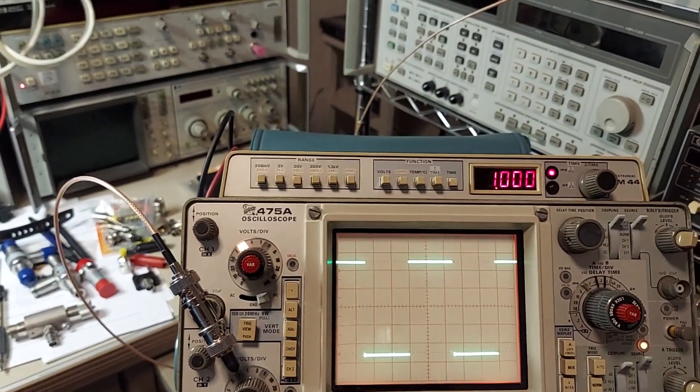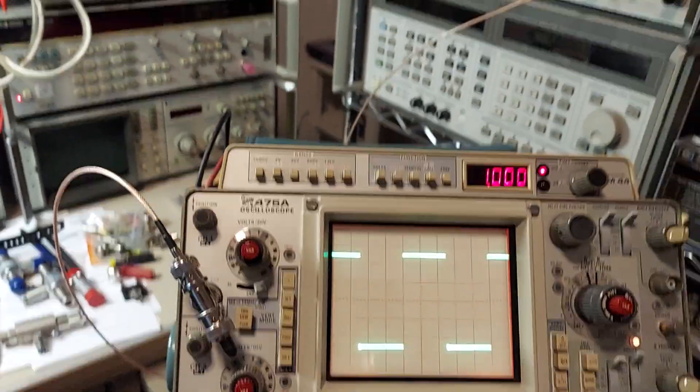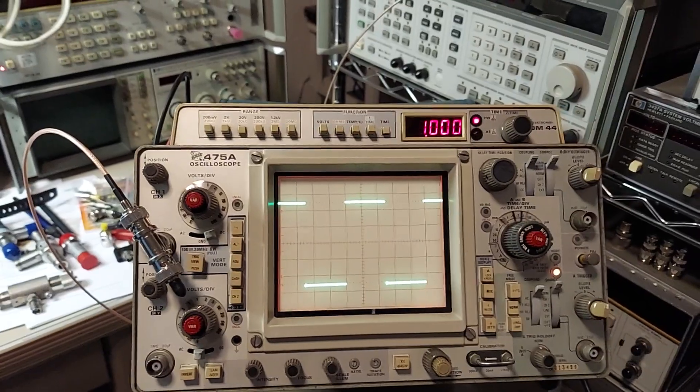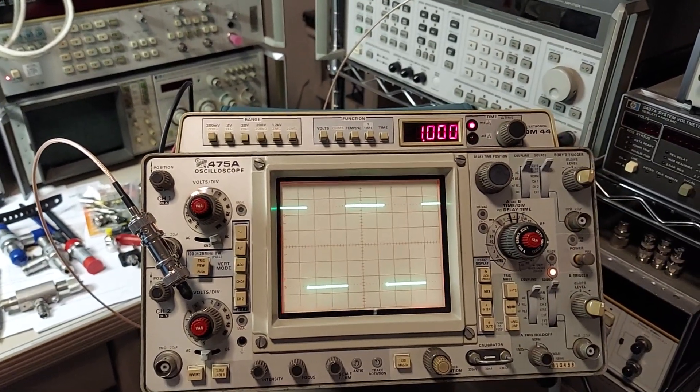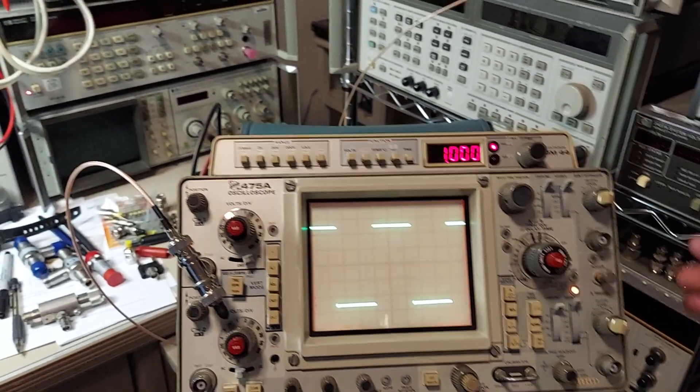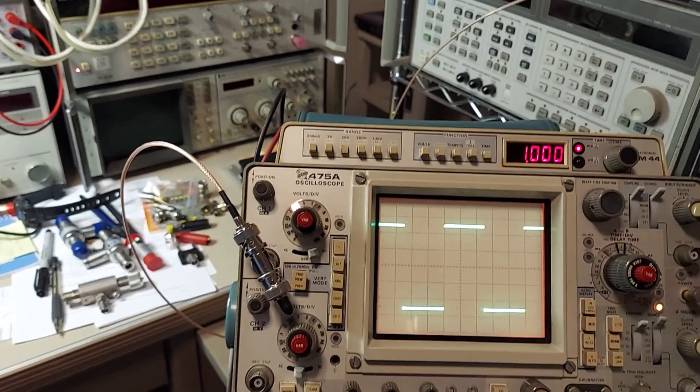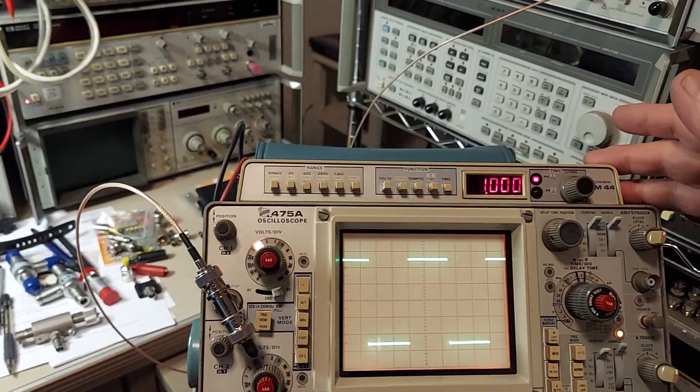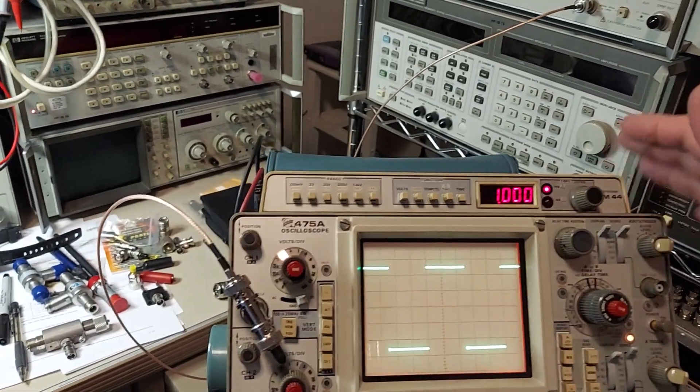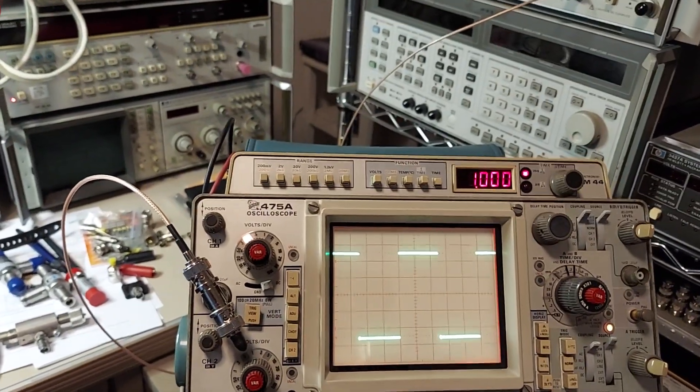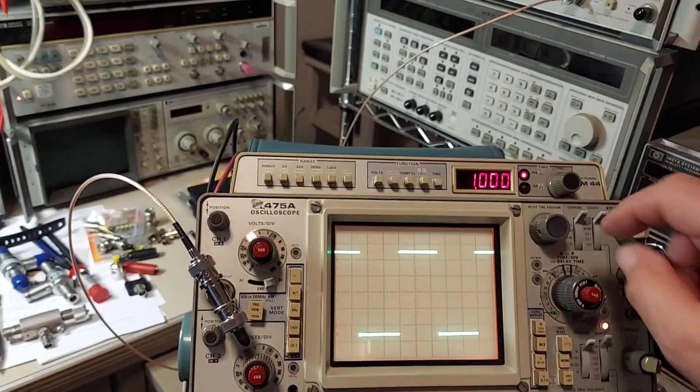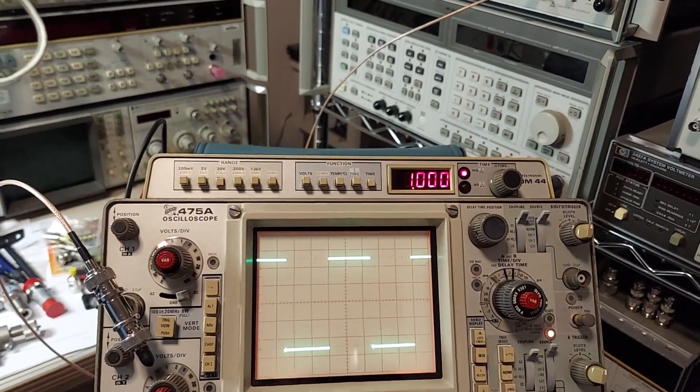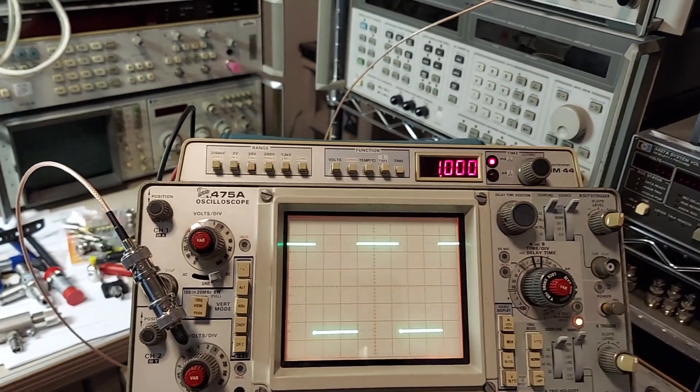Nice scope, man. I used to use the 465 in school. We had one that was just plain Jane, and we had another one that had a multimeter package on it. I remember they had the 10-turn graduated dial there instead of just this blank knob.